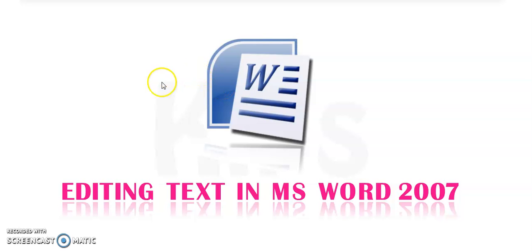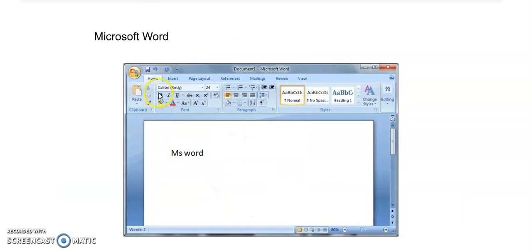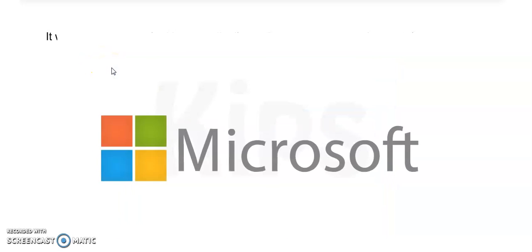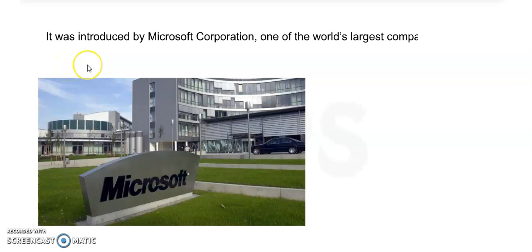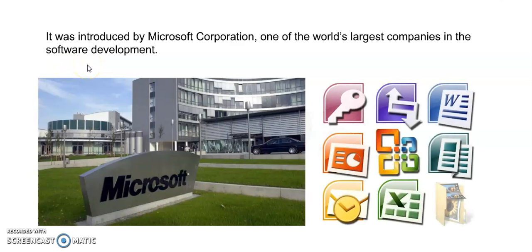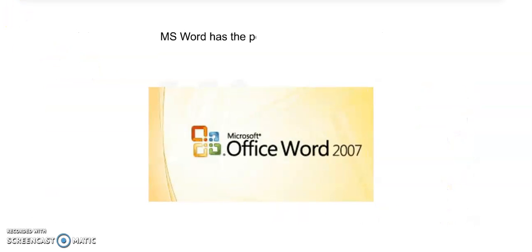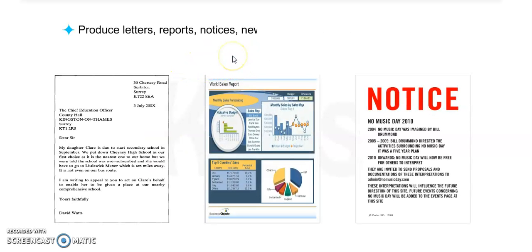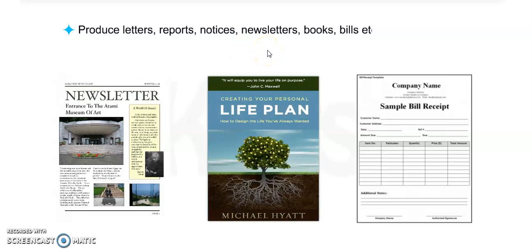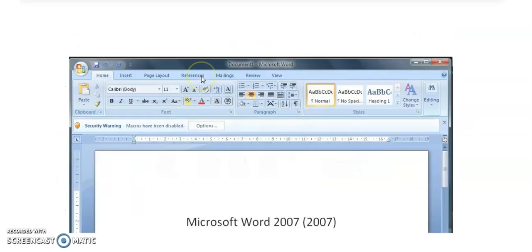Read with me: Lesson 5. Microsoft Word is an application software used for word processing. It was introduced by Microsoft Corporation, one of the world's largest companies in software development. MS Word has the power and flexibility to produce letters, reports, notices, newsletters, books, bills, and more. All these things we can prepare in MS Word.